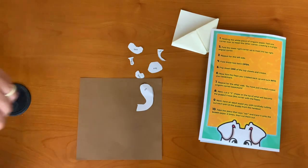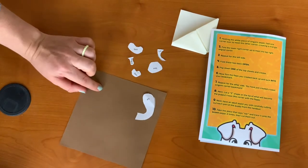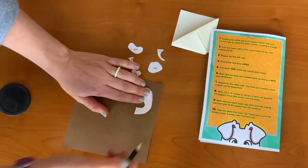Step 10, take the piece that says ear and trace it onto the brown piece of paper two times and then cut them out.